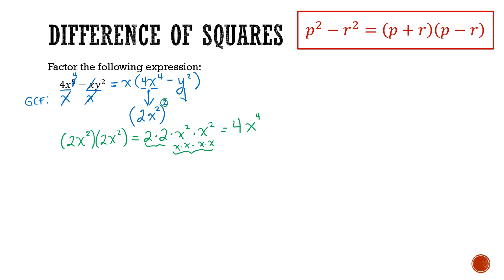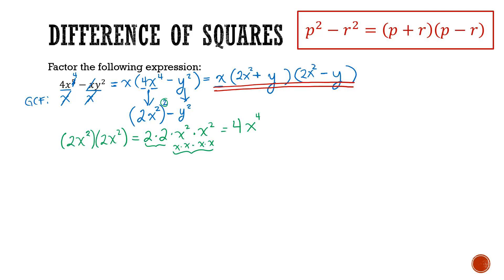For the other term, y squared, it's clearly the square of y. We have a difference between these two terms, so this is indeed a difference of squares — and this is the first example with two different variables, but that's not a problem. Factoring: we keep x as the greatest common factor, then apply difference of squares with first term 2x squared and second term y, giving x times the quantity 2x squared plus y times 2x squared minus y.